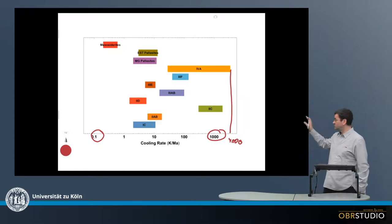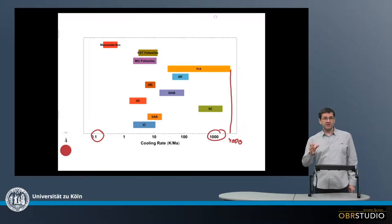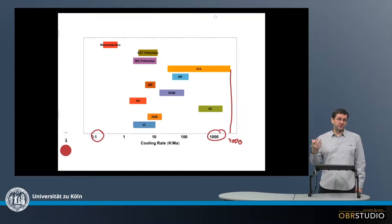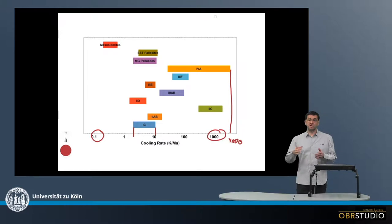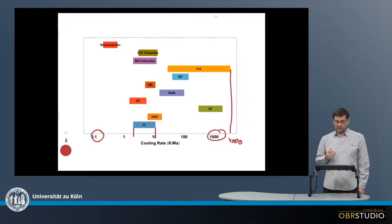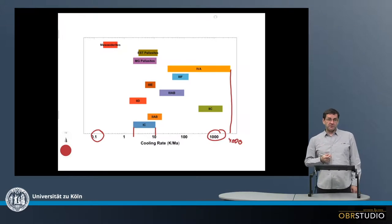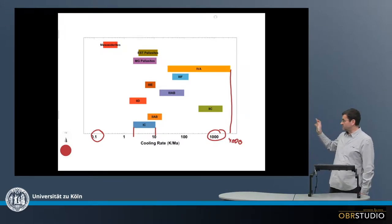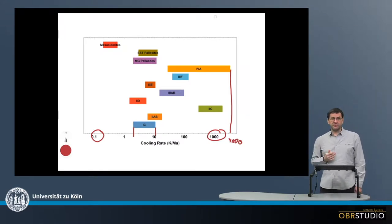It can be seen that most of the individual groups have quite various cooling rates. Like for example, the 1C spans cooling rates across almost one order of magnitude. The same is true for the 4A iron meteorites. In general, there is a large spread among the various cooling rates.